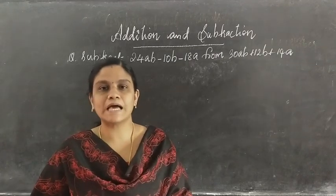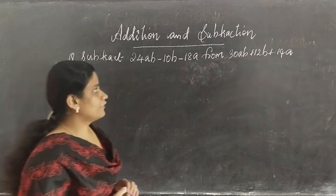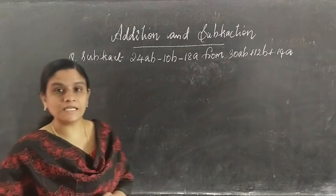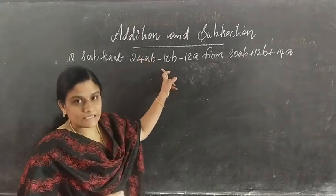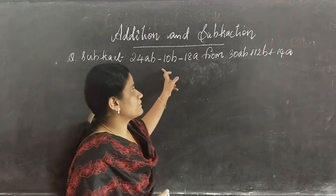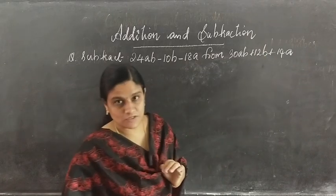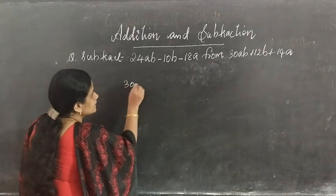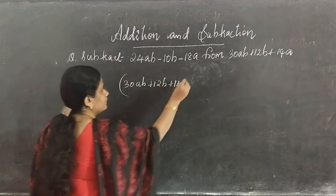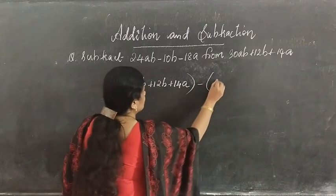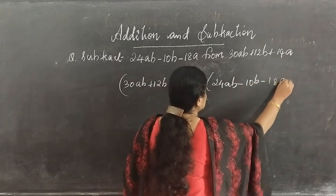Now we will see how to subtract two expressions. The question is: subtract 24ab minus 10b minus 18a from 30ab plus 12b plus 14a. The first expression is subtracted from the second, so we write: 30ab plus 12b plus 14a, minus 24ab minus 10b minus 18a.